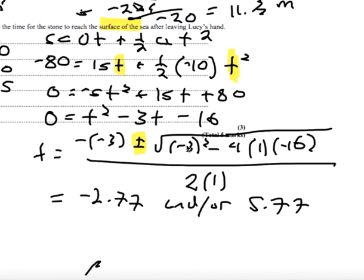Now are they both correct? Are one of them correct? Well, they're kind of both correct in a way, but having a negative time doesn't make much sense in this context. They're both solutions to the quadratic equation, but only one of them is a meaningful answer to the question, when does the stone hit the sea? And that's 5.77 seconds later.